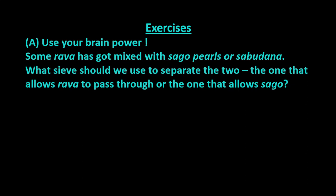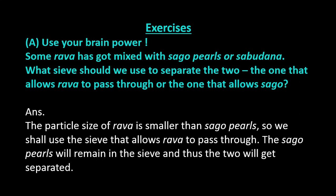Some Rava has got mixed with Sago pearls or Sabudana. What sieve should we use to separate the two — the one that allows Rava to pass through, or the one that allows Sago? Answer: The particle size of Rava is smaller than Sago pearls, so we shall use the sieve that allows Rava to pass through. The Sago pearls will remain in the sieve and thus the two will get separated.